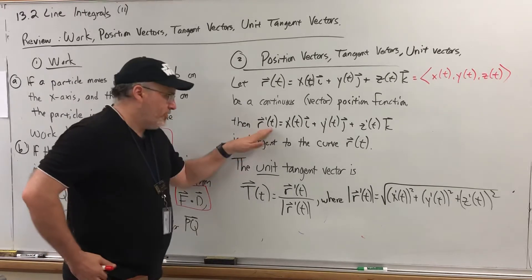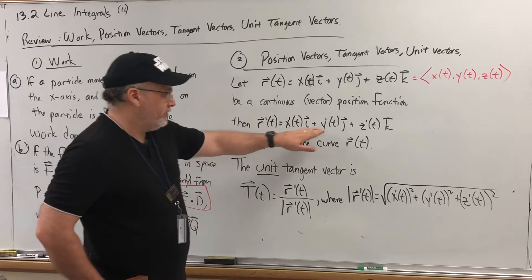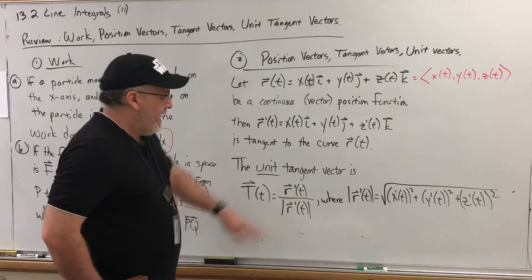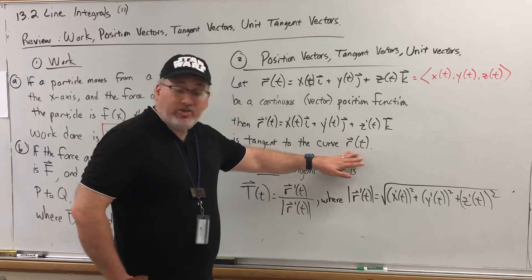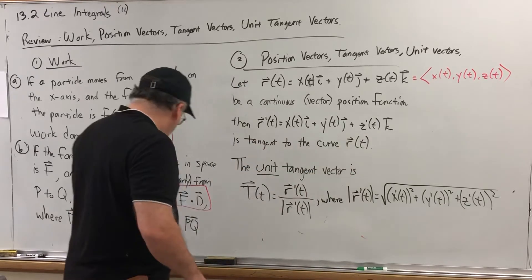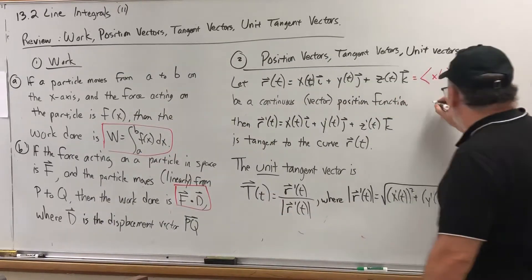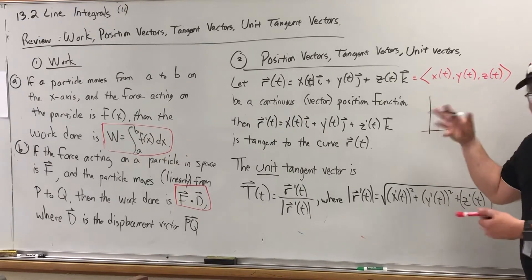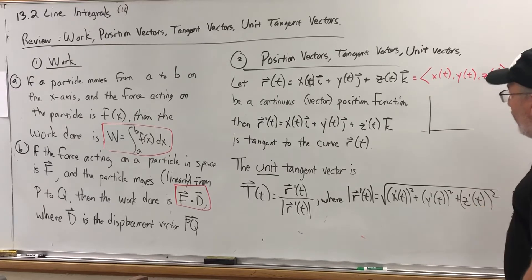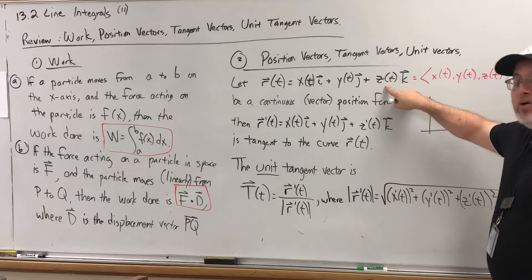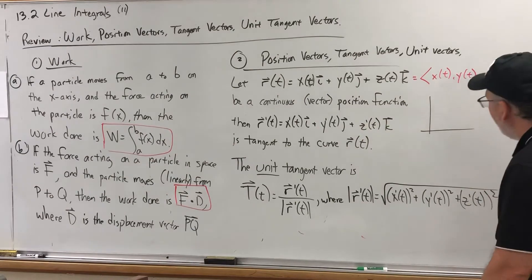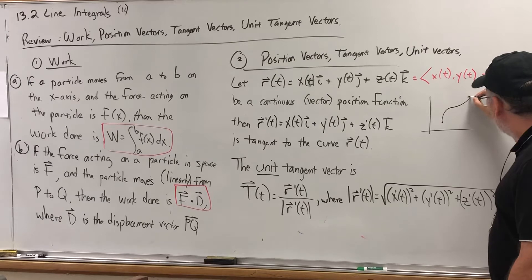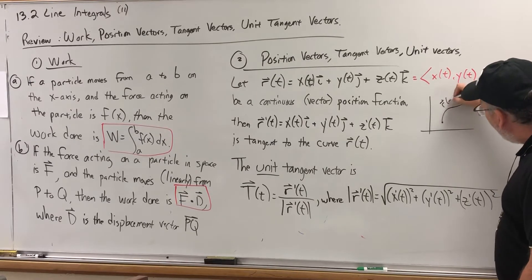Then the derivative of the position function, which is found just by taking the derivatives of its component functions, is tangent to the curve traced out by the position vector. So for example, if we had a position vector—I know this is in three dimensions, but we can knock off the k component and take it down to two dimensions, or just pretend that this function is zero. That way everything stays in the XY plane. Then if we had some position function's graph, it looks like this. So we'll say this is the graph of R(t).